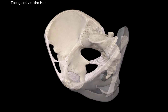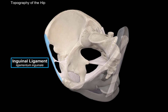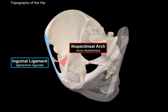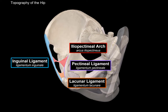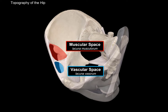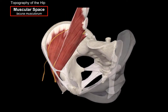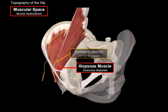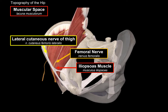The next topic is two openings on the anterior side of the pelvis, but first we need to address a few ligaments. We have the inguinal ligament, going from the anterior superior iliac spine to the pubic tubercle, then the iliopectineal arch, the lacunar ligament, and the pectineal ligament. These four ligaments create two spaces: the muscular space, or lacuna musculorum, and the vascular space, or lacuna vasorum. The muscular space gets its name because it is mostly taken up by the iliopsoas muscle, along with the femoral nerve and the lateral cutaneous nerve of the thigh.